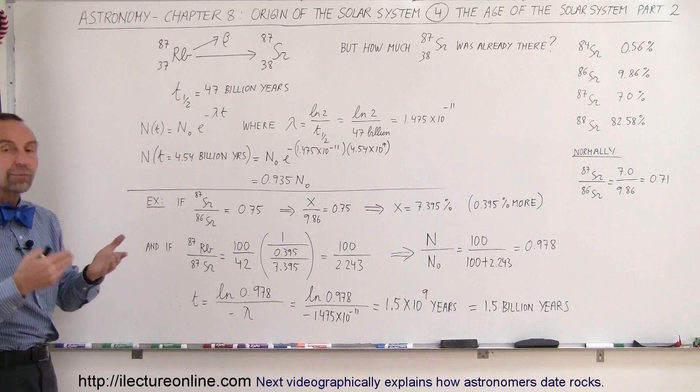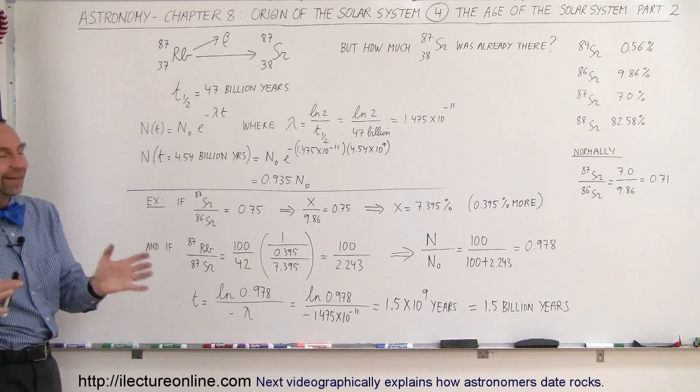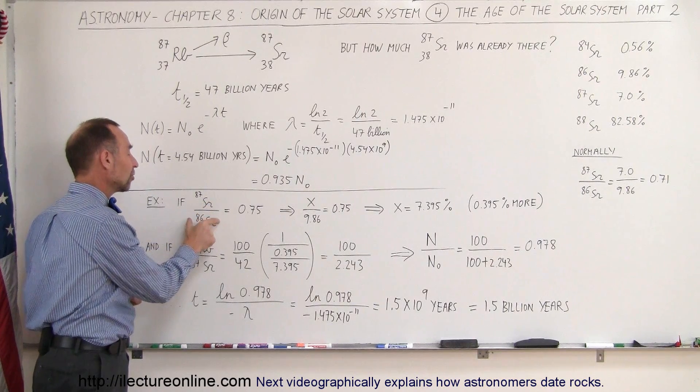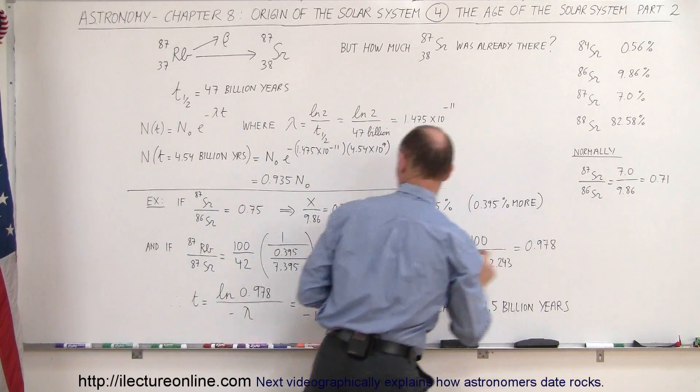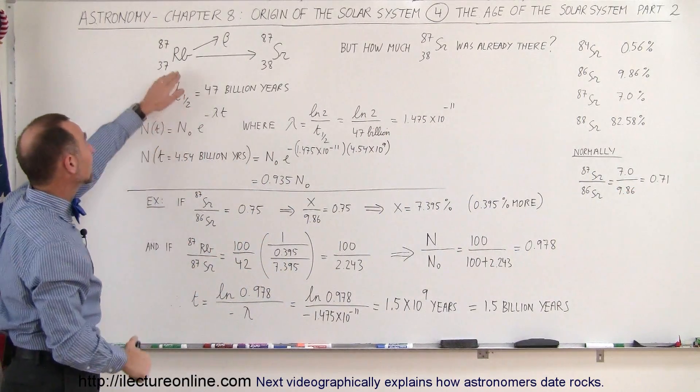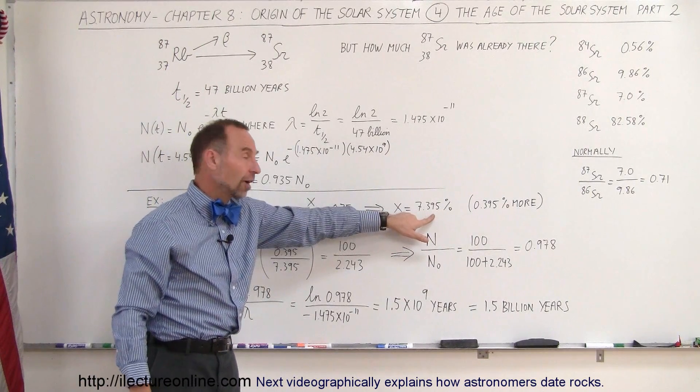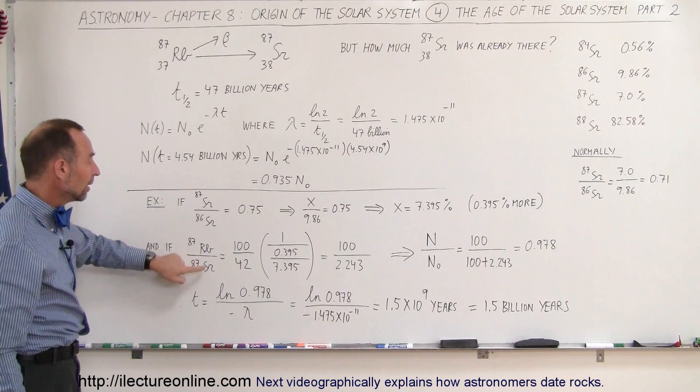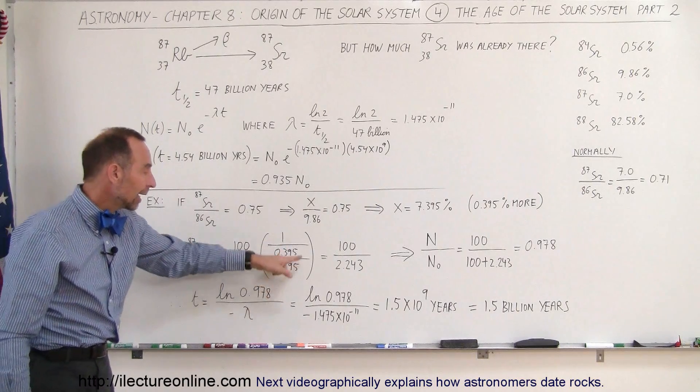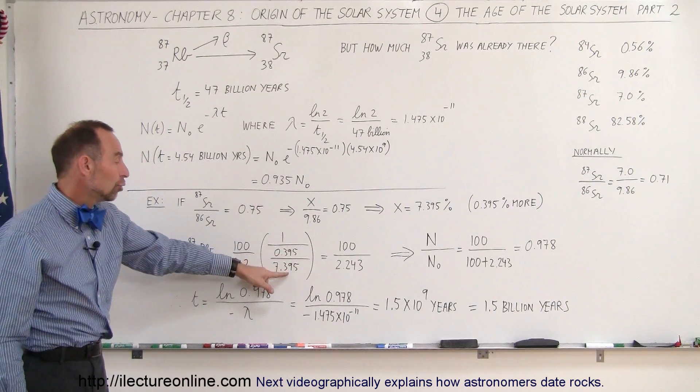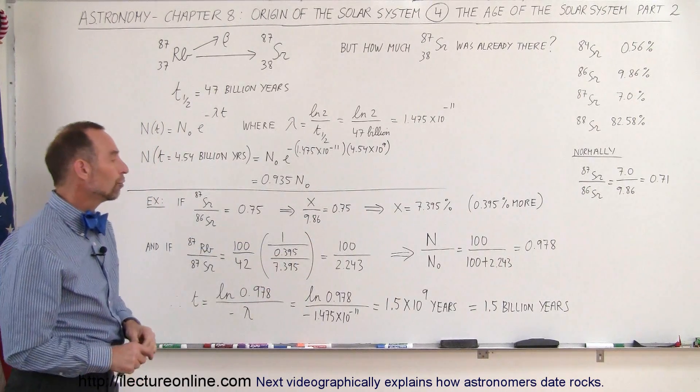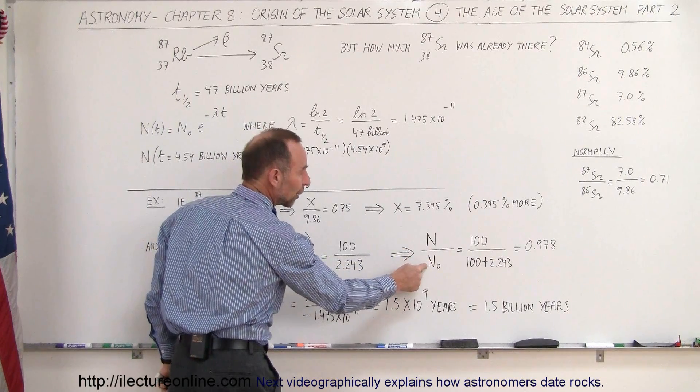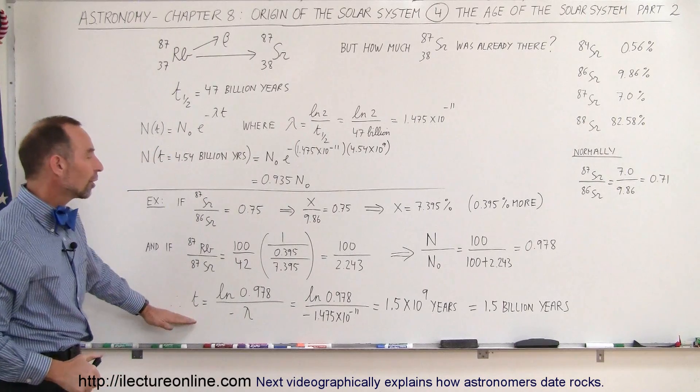So that rock would be about 1.5 billion years old plus or minus a little bit because there's obviously always going to be some errors that we make. But it's interesting. Simply by measuring the ratio of the Strontium that's in the rock divided by Strontium-86, we know that ratio normally is 0.71, but here we can see that it's a little higher, which means that it must have come from the decay of Rubidium. And then from that, we find the excess Strontium, 0.395% more than we would normally expect. Then we do the ratio comparison between Rubidium and Strontium. So normally it would be 100 to 42, but then we compare that to the 1 over the increase over the normal amount, or the measured amount, I should say. And that gives us this ratio of 100 to 2.243. Then we find the ratio of the Rubidium that is left compared to Rubidium that would be there in that ratio, 0.978. And then we use the equation to find the age of the Earth.